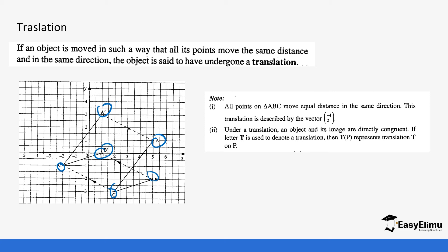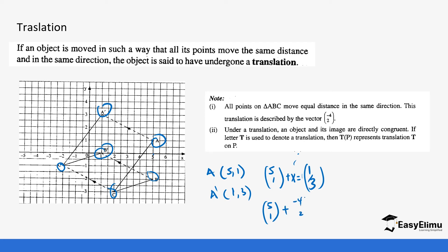For example, looking at point A: point A is at (5, 1) and A prime from the image is at (1, 3). You can see that there is a certain vector that has been added to get this image, and that vector is what we refer to as the translation vector. So if we take (5, 1) and add the translation vector, which is negative 4 and 2, we get (1, 3).